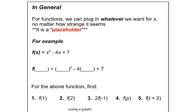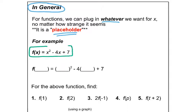Continuing where we left off — for functions, we can really just plug in anything we want, whatever we want for x. That's our input, no matter how strange it is, because really functions are kind of like a placeholder. If I take this function here, f of x equals x squared minus 4x plus 7, x is our input or domain, and f of x is like our y value or output or range. We can really plug in anything we want for x.